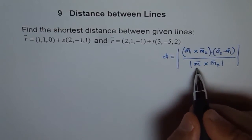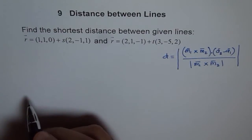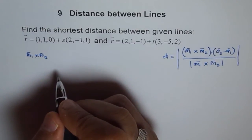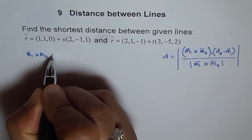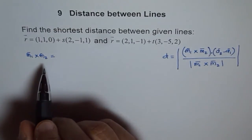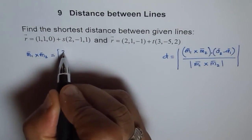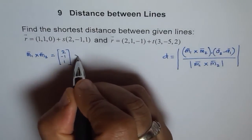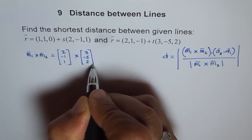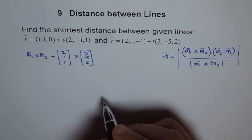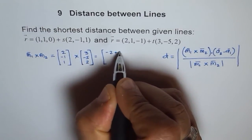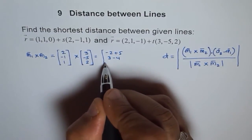What we can do is find M1 cross M2 first and then do the rest. The cross product of M1 and M2 is equal to (2, minus 1, 1) cross (3, minus 5, 2), which gives components: 3 minus 1, 3 minus 4, minus 10 plus 3.